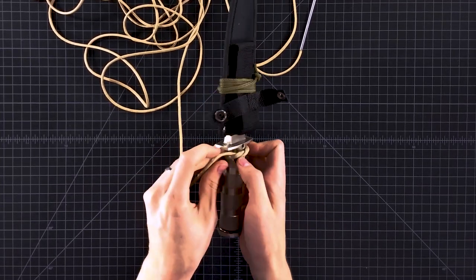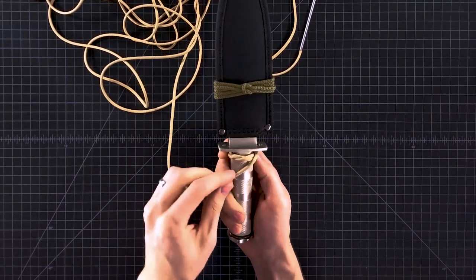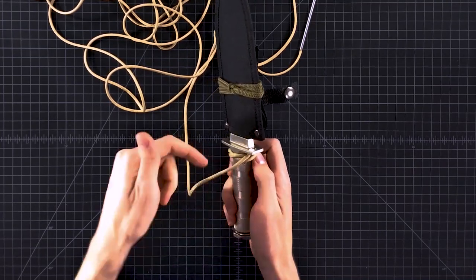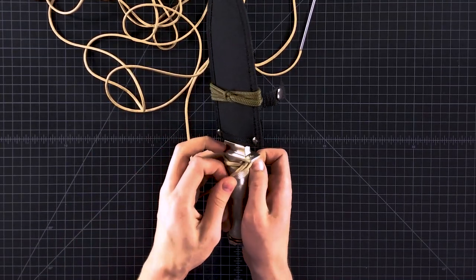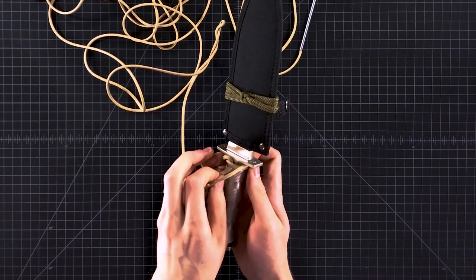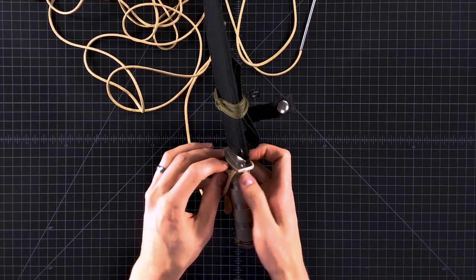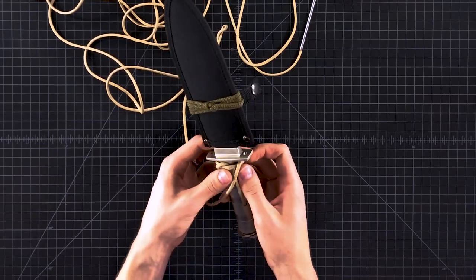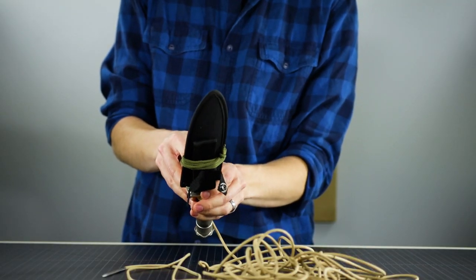So then you kind of push your knots back. And usually going around once is about four loops around. So now I've come back to where I started. And I'm going to pull my end tight here, both ends.